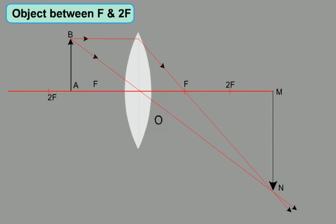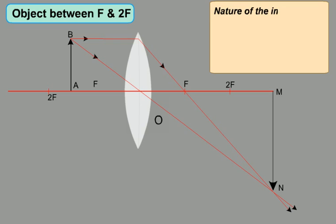Now, when the object is placed between F and 2F — when an object AB is placed between F and 2F, the image MN will be formed beyond 2F on the other side of the lens. The image will be real, inverted, and magnified.